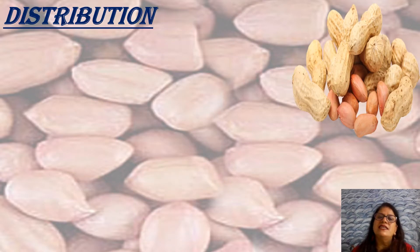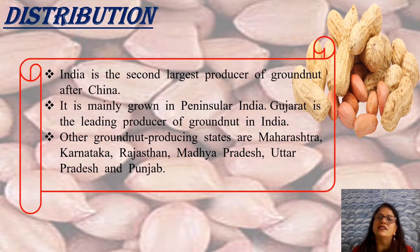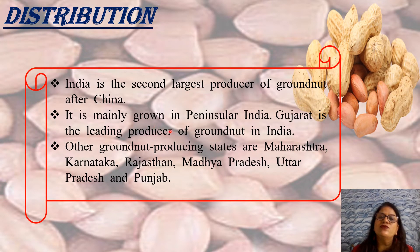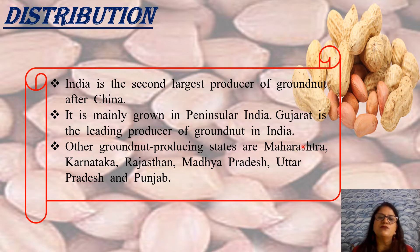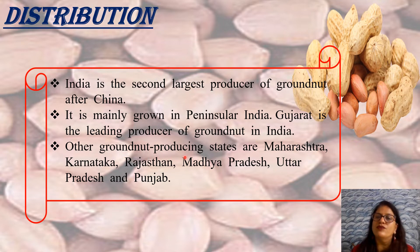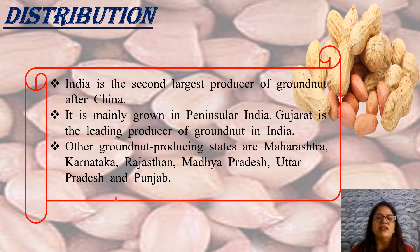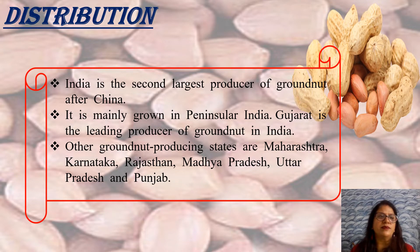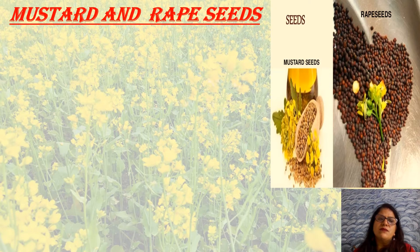India is the second largest producer of groundnut in the world. It is widely grown in Peninsular India, Telangana, and Tamil Nadu, with Tamil Nadu being the largest producer in the country. In India, Gujarat is the leading producer of groundnuts, followed by Maharashtra, Karnataka, Rajasthan, Madhya Pradesh, Uttar Pradesh, and Punjab.